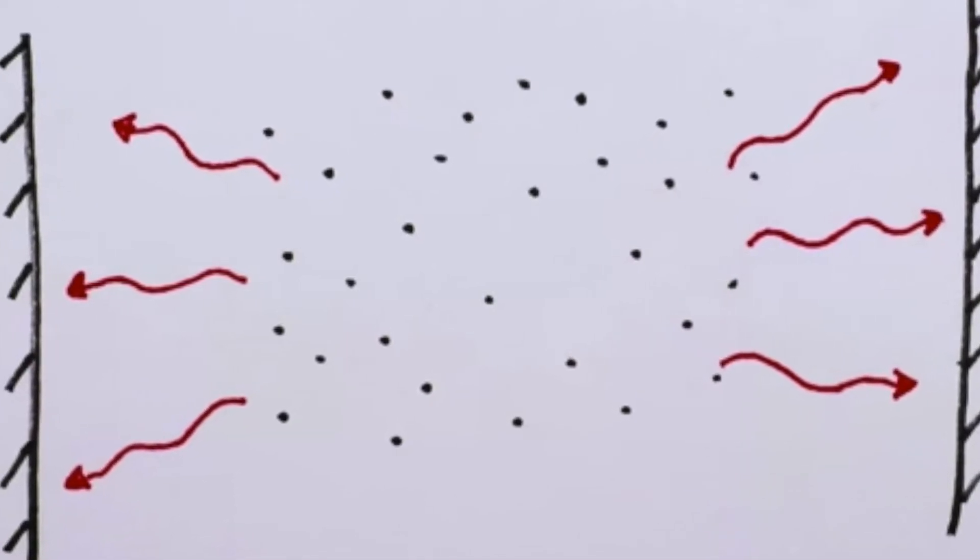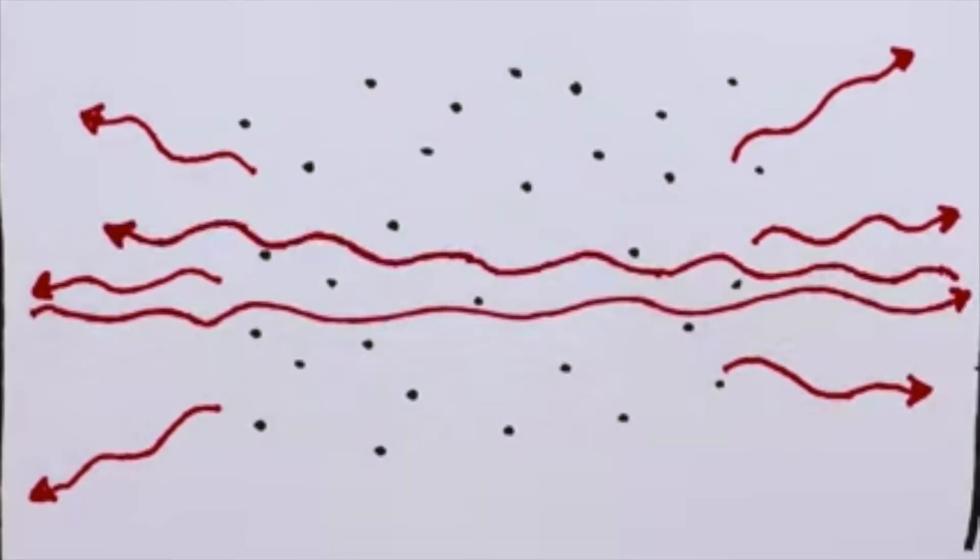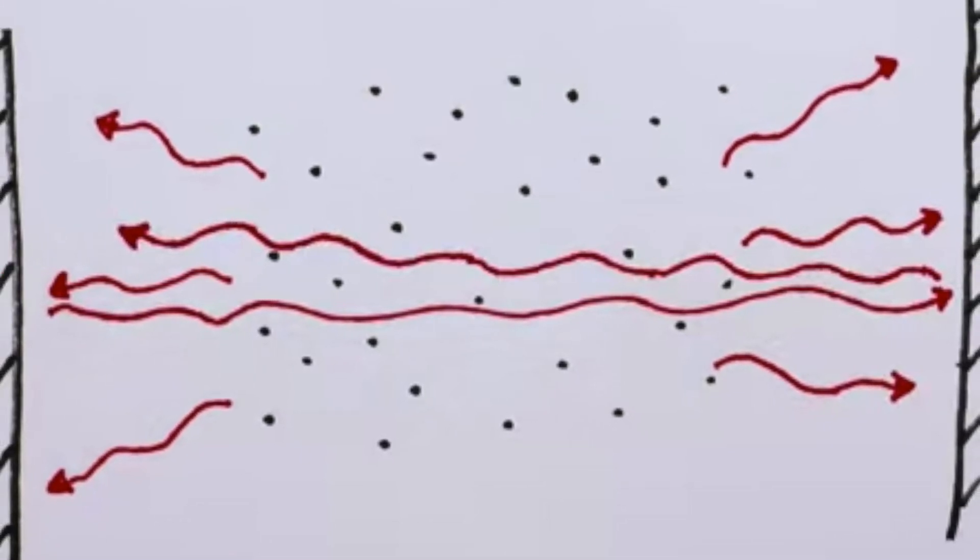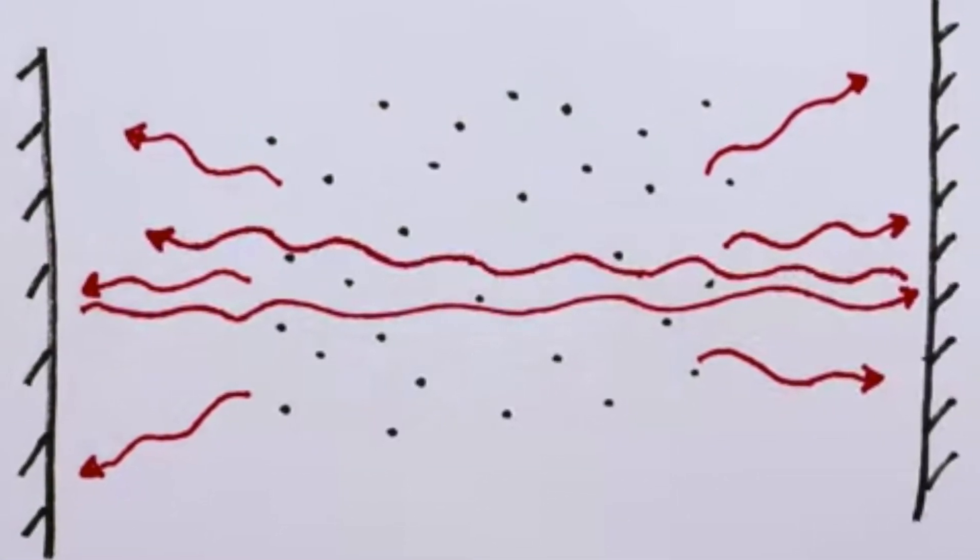That first photon then creates a chain reaction, which makes the other excited atoms emit their photons. Soon we have a bunch of photons bouncing back and forth between these two mirrors.